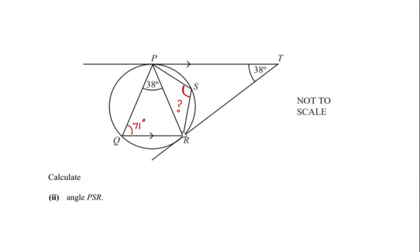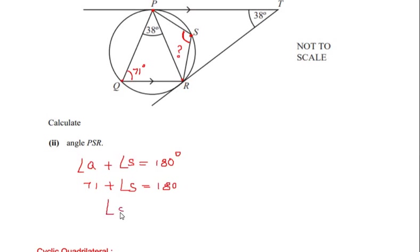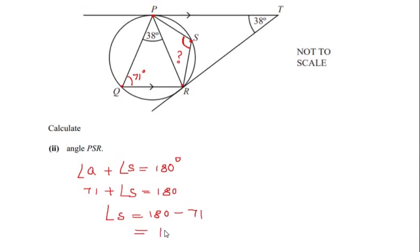In cyclic quadrilateral PQRS, the vertices lie on the circle. Angle Q is opposite to angle S, and angle Q was found in part A to be 71 degrees. So: angle Q plus angle S equals 180 degrees, meaning angle S equals 180 minus 71, which gives 109 degrees.